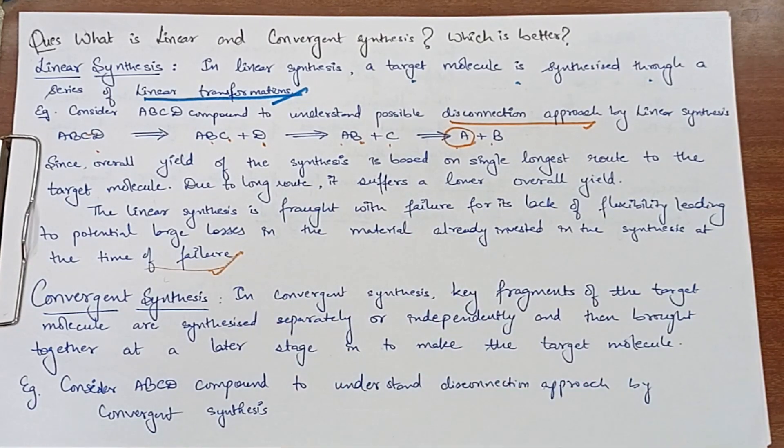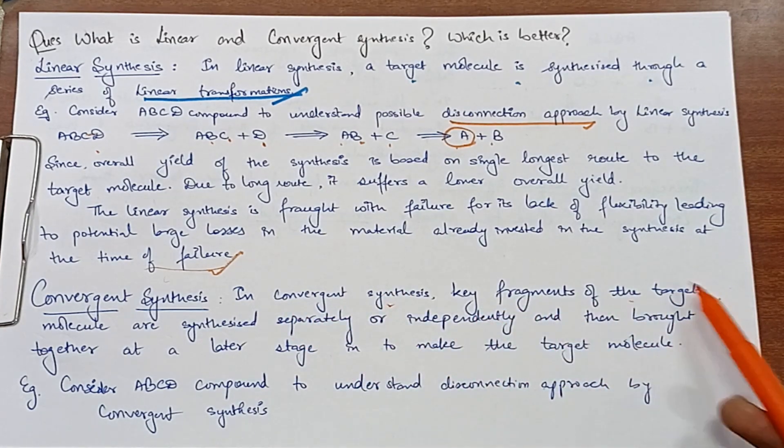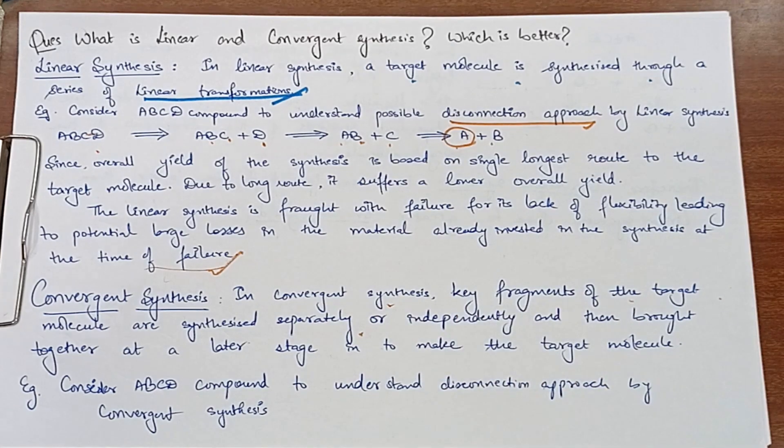Ab next hai hamara paas convergent synthesis. Convergent synthesis mein hum kya dekhte hain? In convergent synthesis, key fragments of the target molecules are synthesized separately. Humari key fragments toh hum target molecule ki unko separately synthesize karte hain. Ya phir humko independently synthesize karte hain.